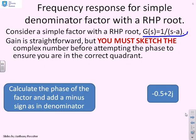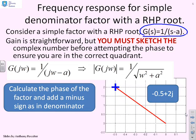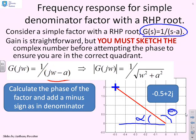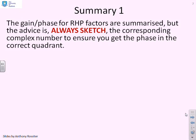Now we put the factor into the denominator: G(s) = 1/(s - a). We recommend doing the sketch again. The gain is straightforward. This is the same example as last time — we're interested in angle θ, obtained by first calculating angle α. The argument for the complex number jω - a is 180 - tan⁻¹(ω/a). But since it's in the denominator, we need to add a minus sign, giving: -(180 - tan⁻¹(ω/a)). The gain and phase for right half plane factors are summarised, but always sketch to make sure you don't make a silly mistake.